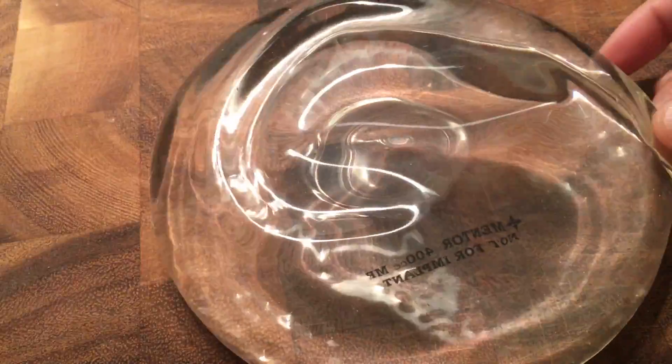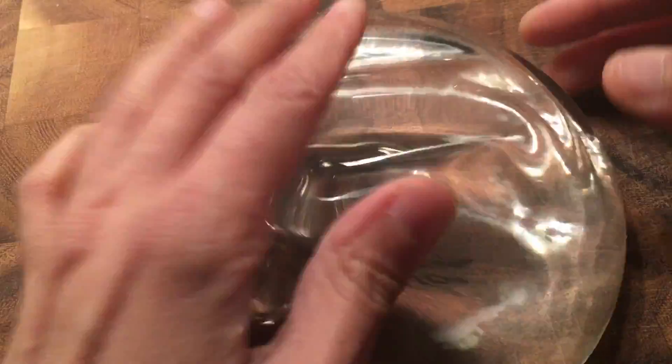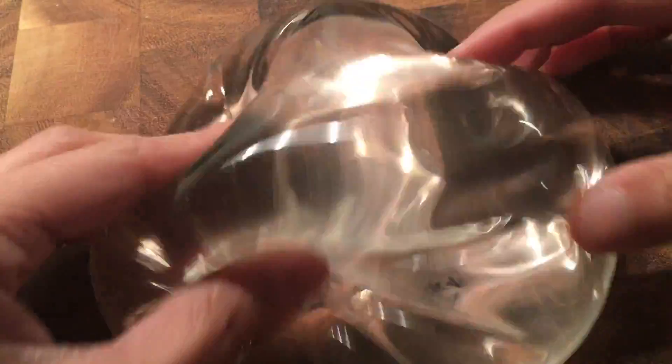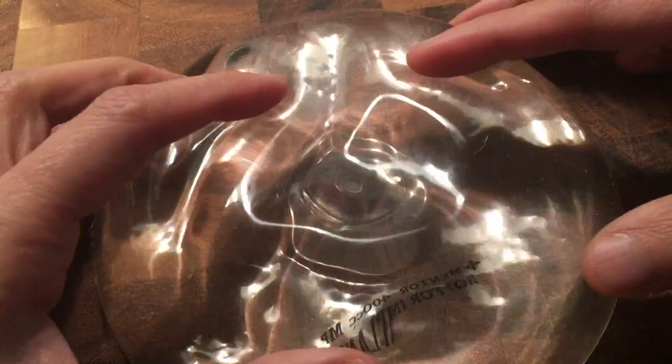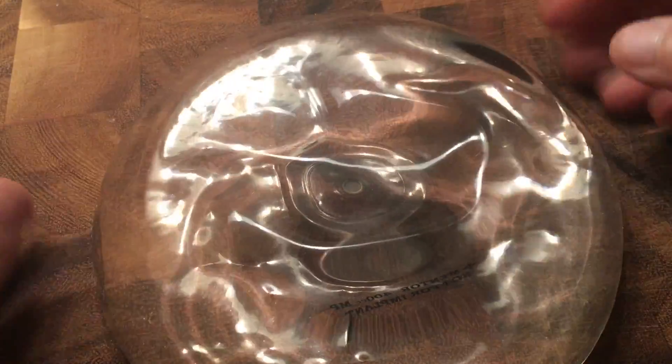Now these are both silicone gel implants. This is a smooth round silicone gel implant. It's a traditional silicone gel. It's not a cohesive, it's not a gummy bear, it's a silicone gel.